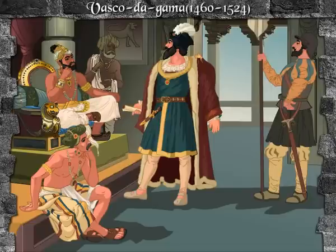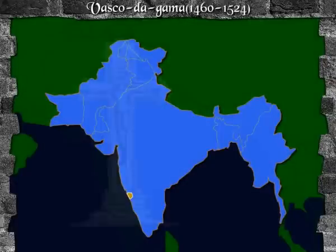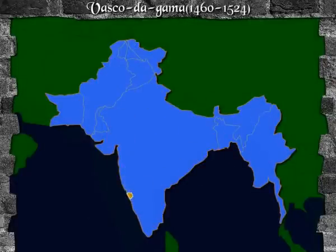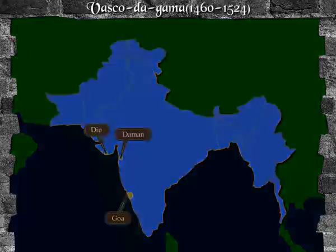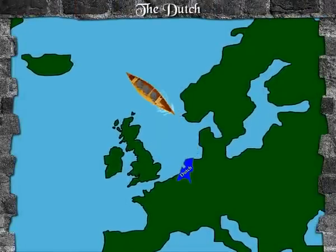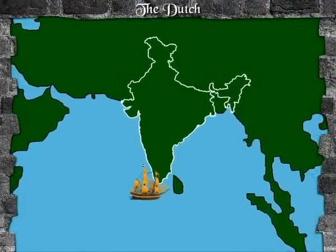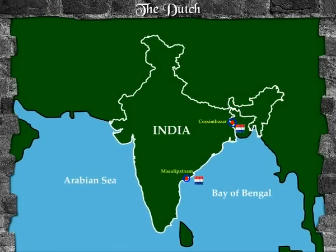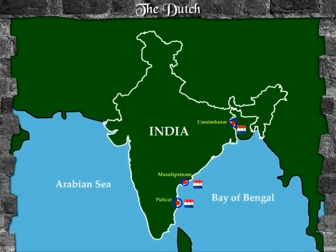Later, as the Portuguese business advanced, they gradually started imposing their religion and set up their imperial empire in Goa, Daman and Diu, on the west coast of India. The Dutch too came to India for business purposes, and later established their imperialism on the east coast of India.